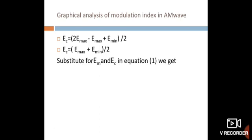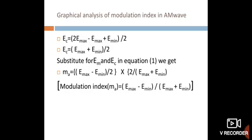Substituting for Em and Ec in equation 1, we get: ma = [(Emax − Emin) / 2] / [(Emax + Emin) / 2], therefore the modulation index of amplitude modulated wave: ma = (Emax − Emin) / (Emax + Emin). This is the expression for modulation index in amplitude modulated wave.